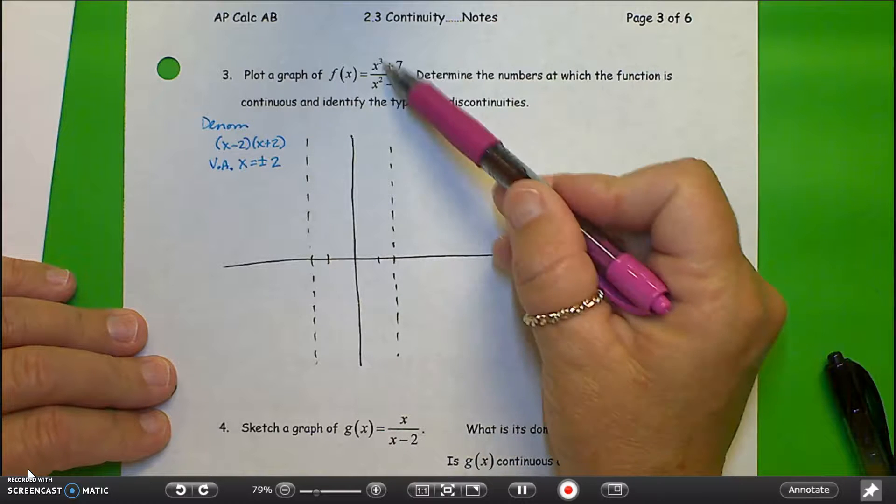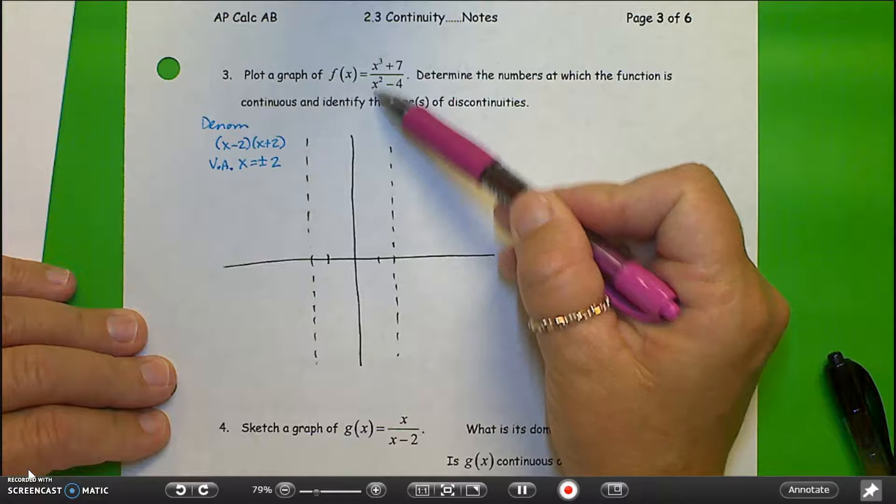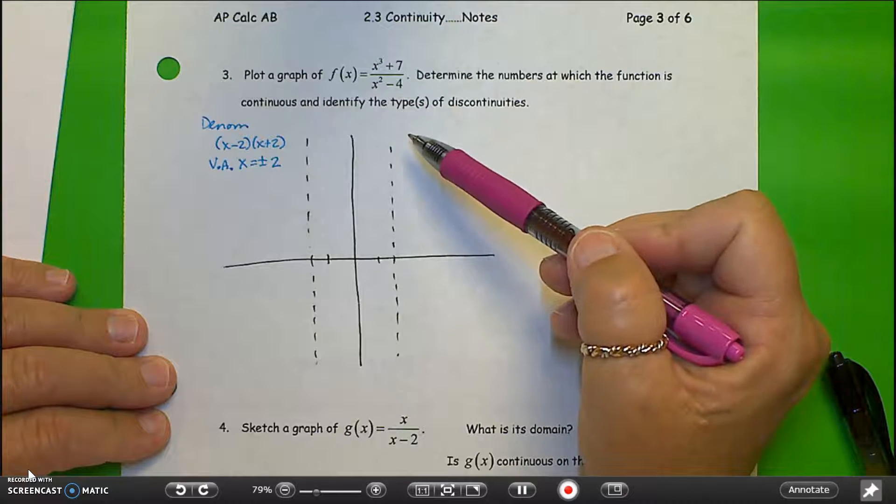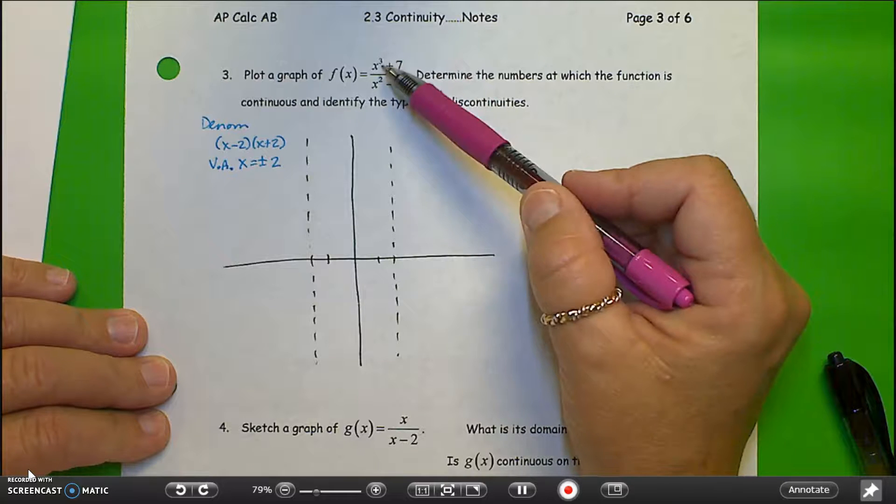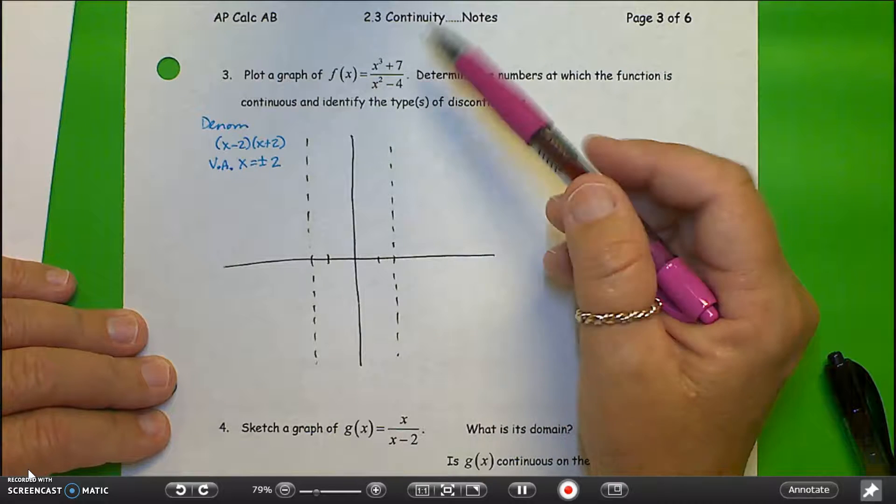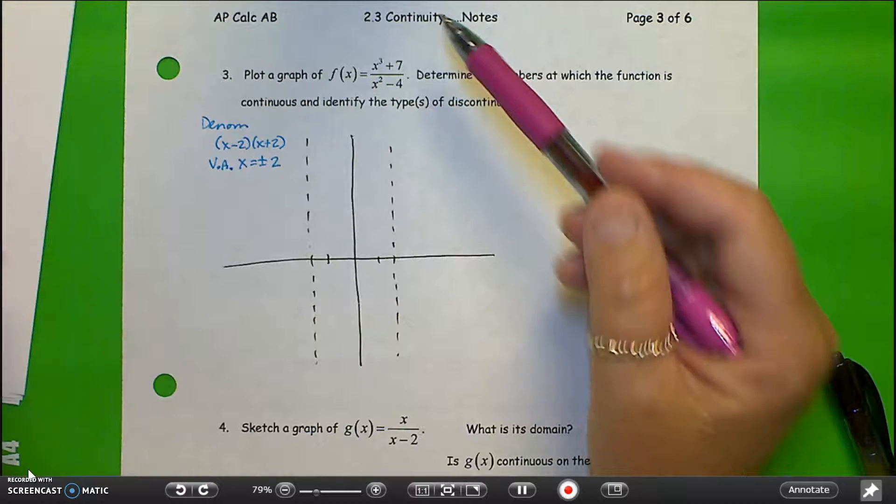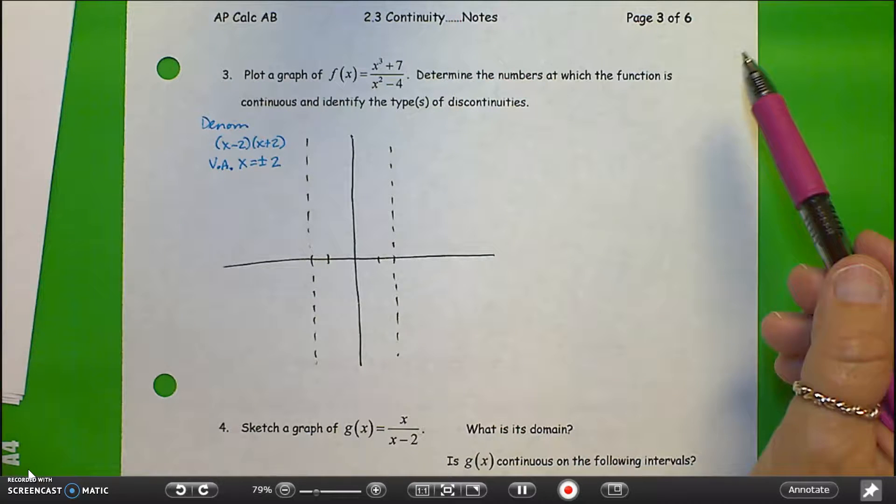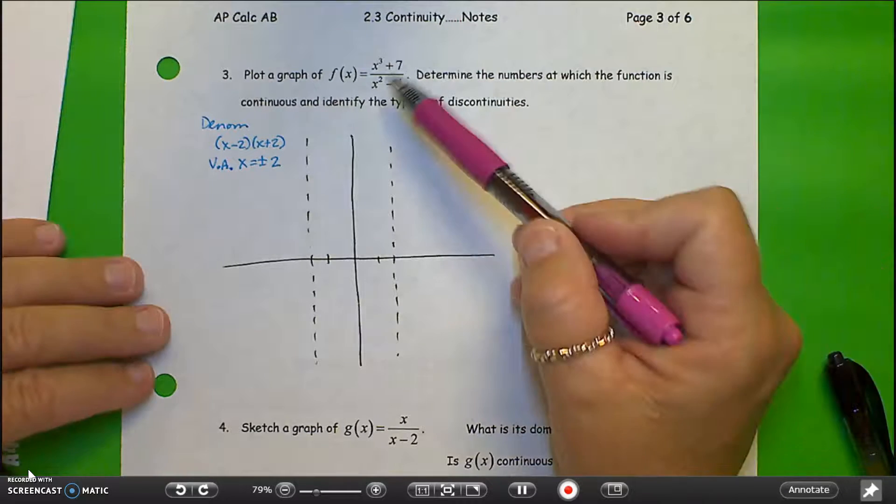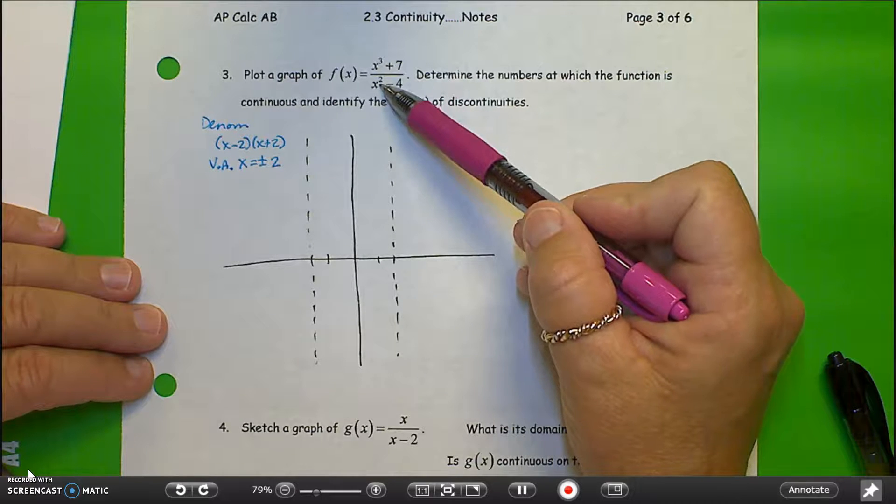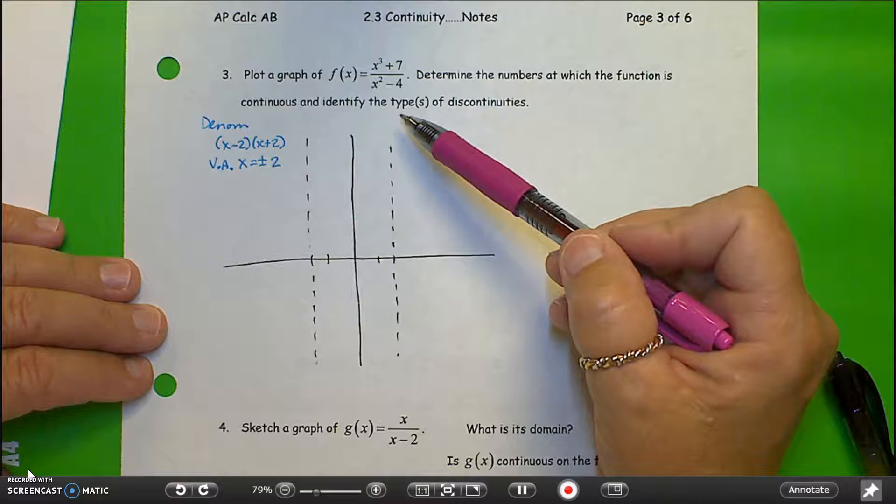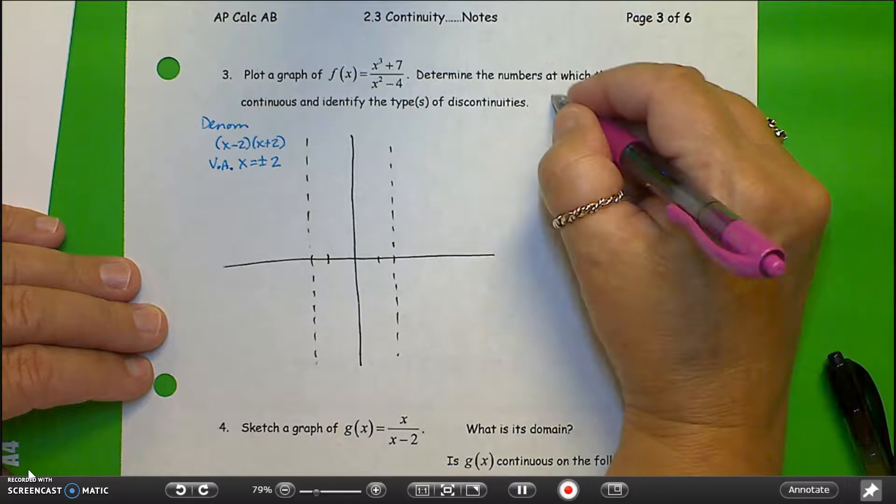If I compare the powers of the highest order term, I have x cubed and x squared. So the numerator is larger, which means the limit as we go to infinity is going to be going to positive or negative infinity. But the other thing that tells us, since the power is exactly one more in the numerator than it is in the denominator, I have an oblique asymptote.